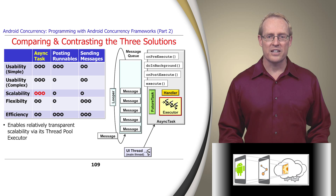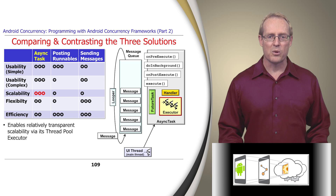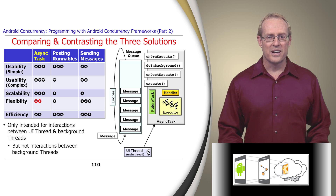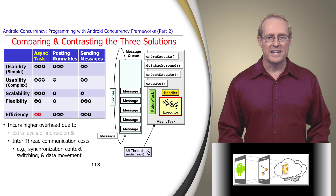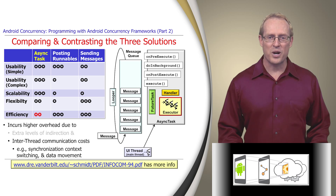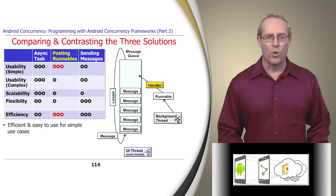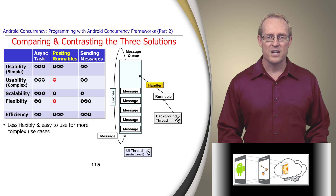AsyncTask also enables relatively transparent scalability via its ThreadPool executor. However, although the AsyncTask framework is scalable and easy to use for both simple and complex concurrent applications, it's not very flexible since it's only intended for interactions between the user interface thread and background threads, but not interactions between background threads alone. Likewise, its internal framework implementation is very sophisticated, so it incurs higher overhead due to its many levels of indirection and the synchronization, context switching, and data movement costs associated with communicating between the threads. In contrast, posting runnables is efficient and easy to use when knowledge of what commands to run can be centralized at the point where the post method is invoked. However, this approach isn't very flexible since it's hard to parameterize or modify commands once they've been posted.